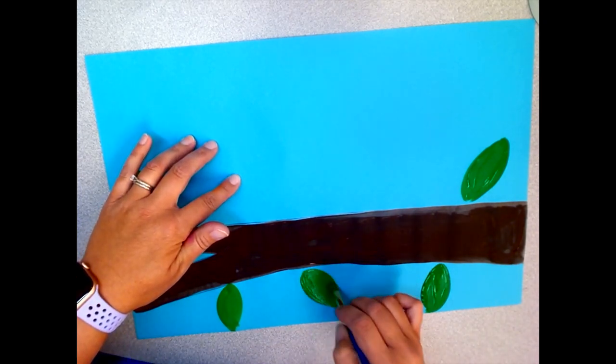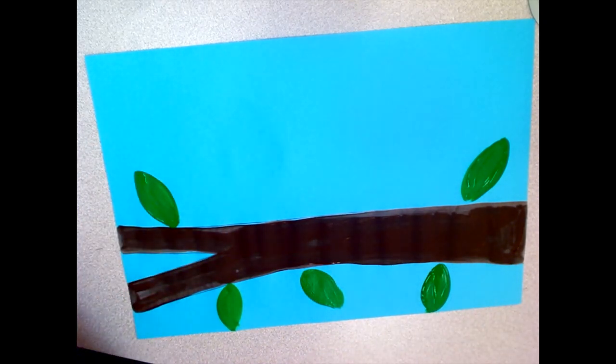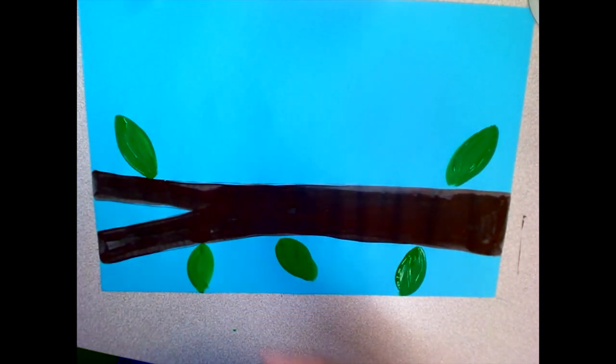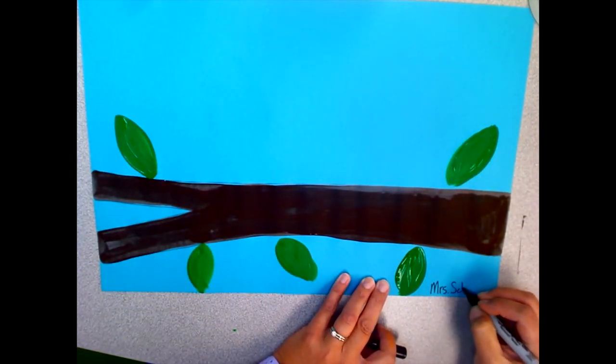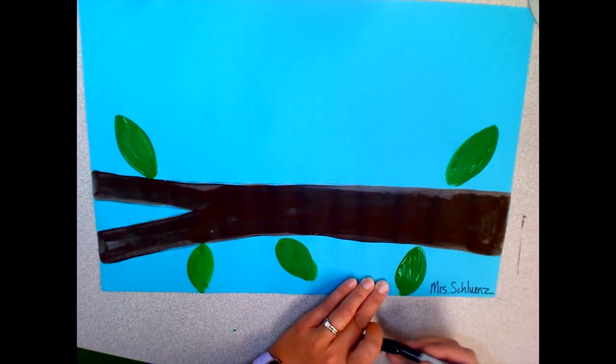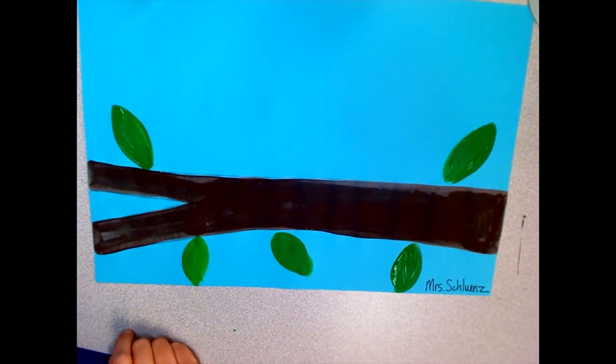Make about five or six leaves and when you're finished, you'll take a sharpie and write your name in the bottom corner. Put your painting in the dry rack and you're finished for today.